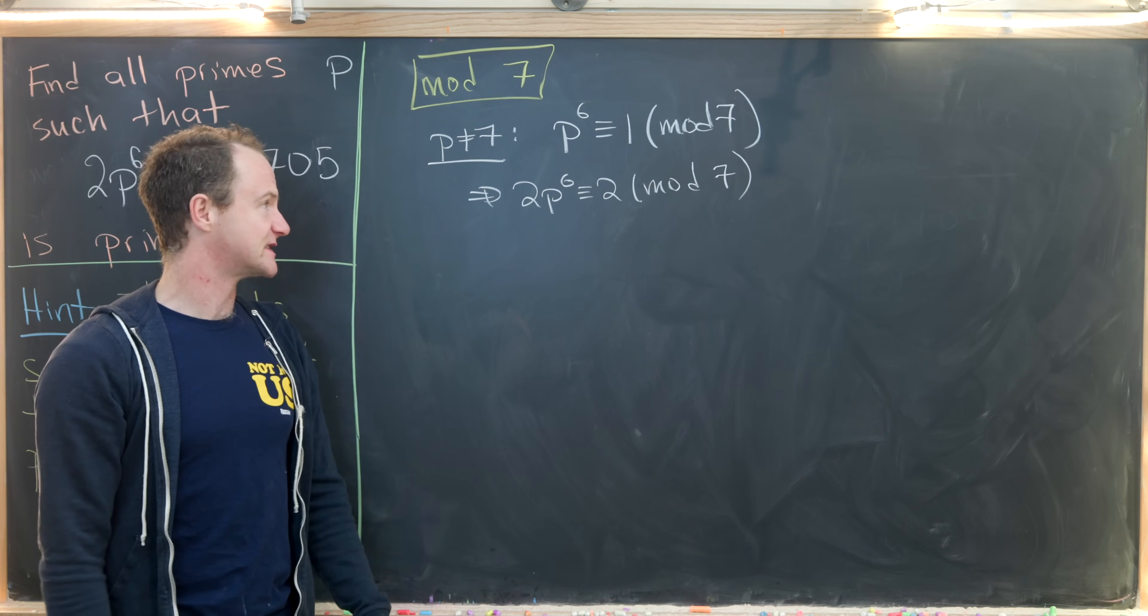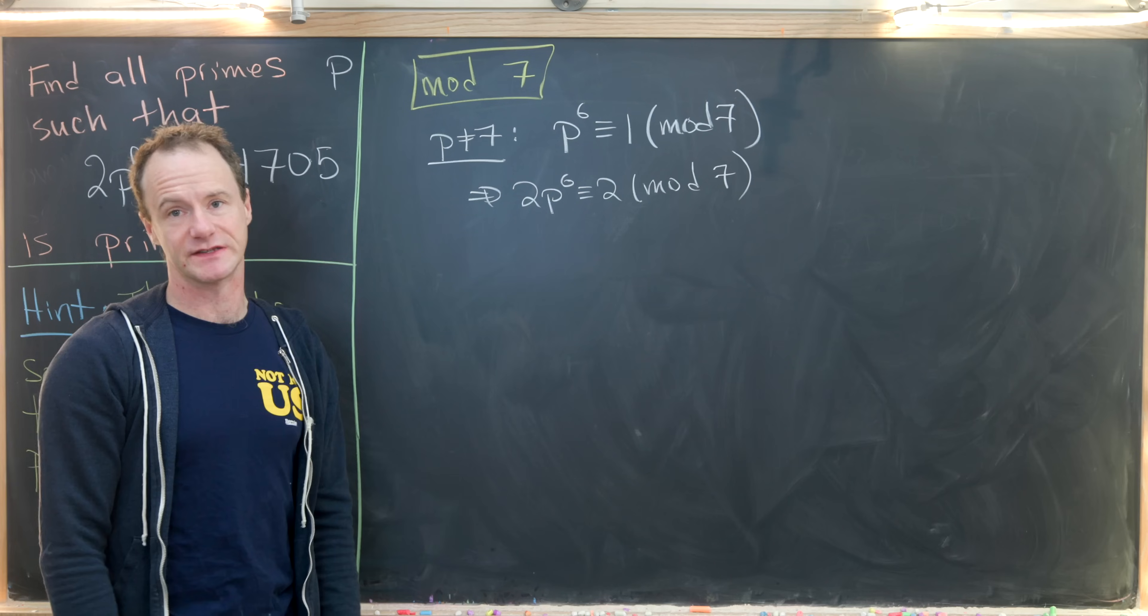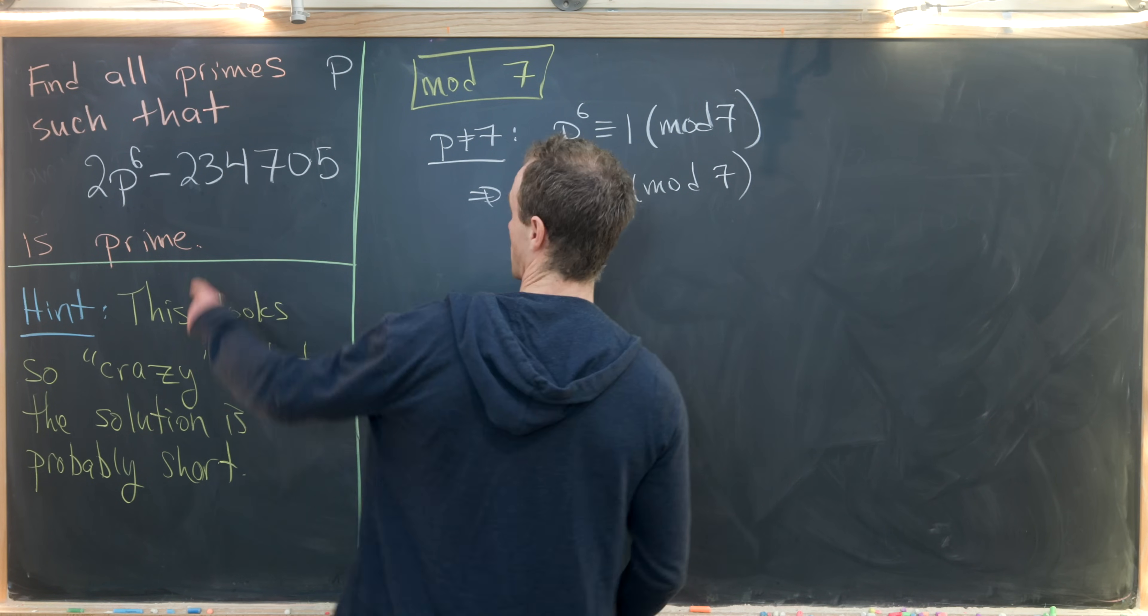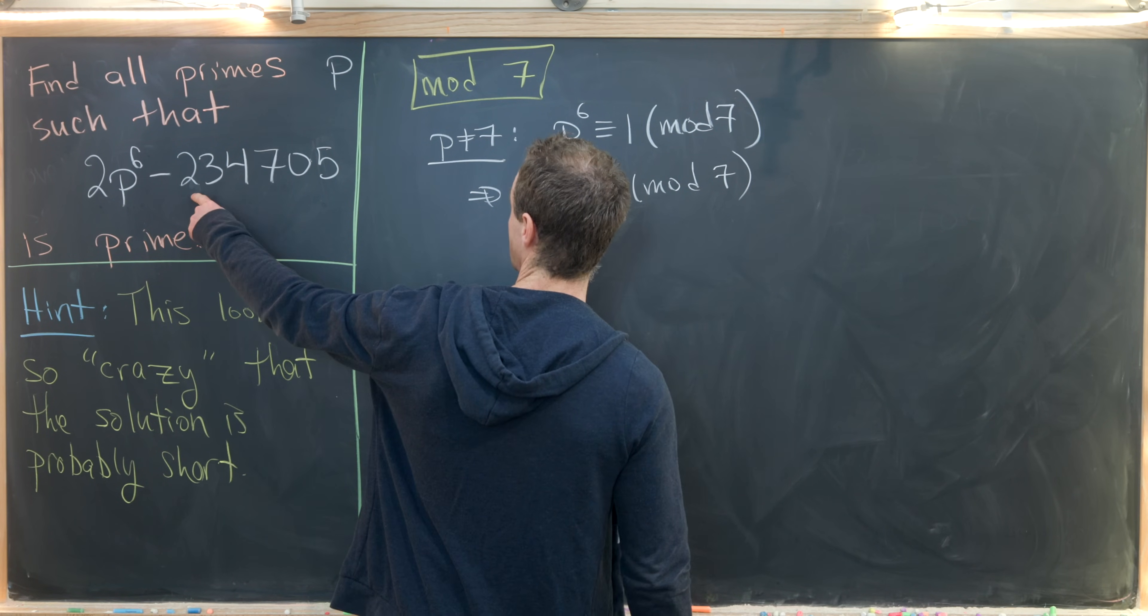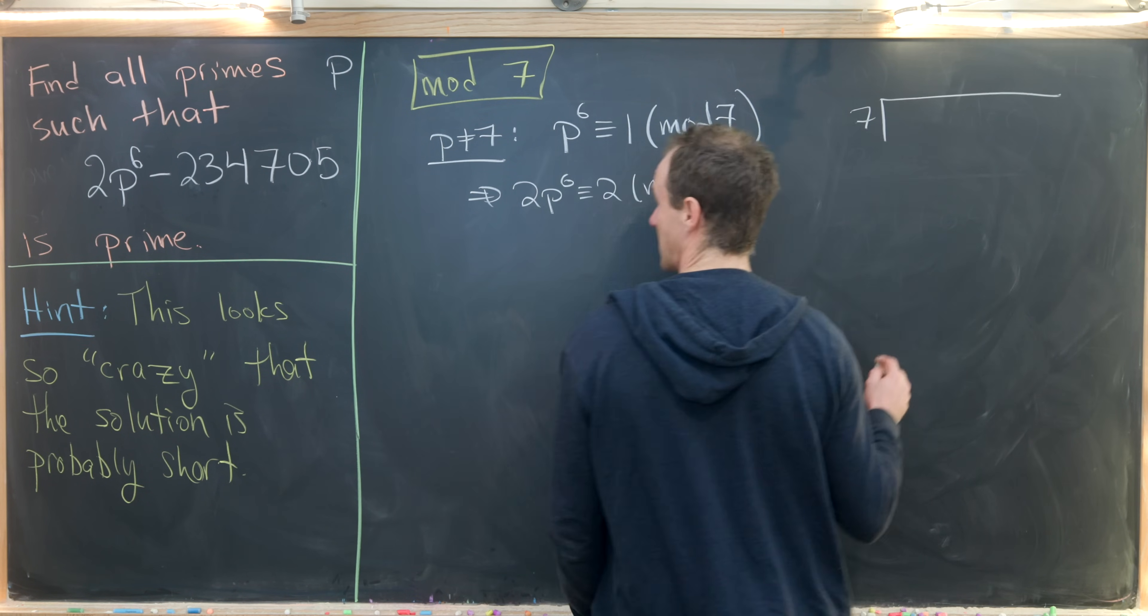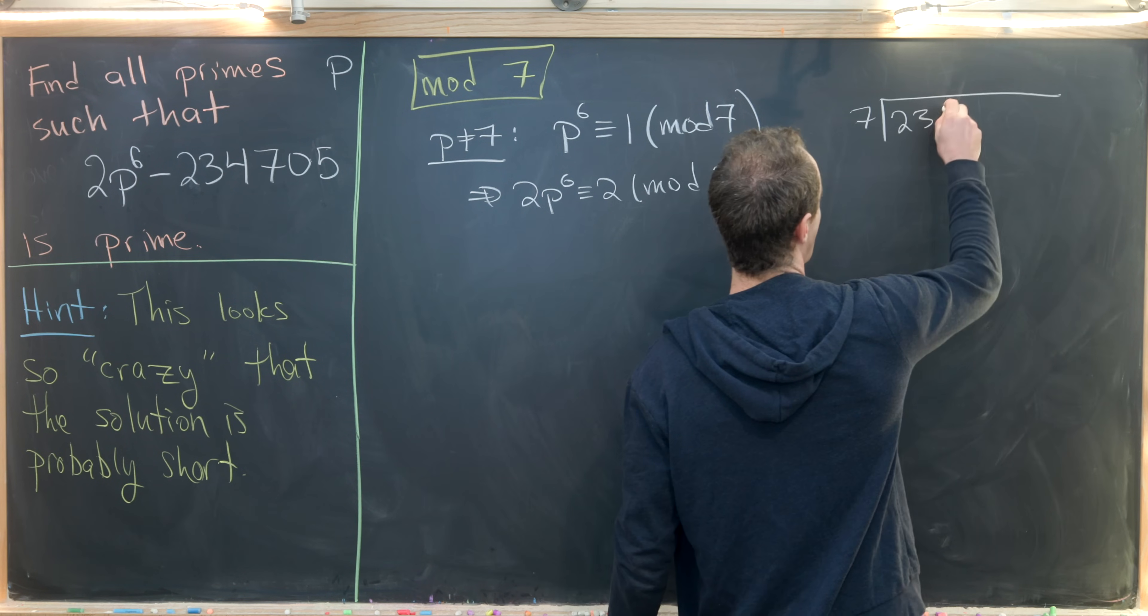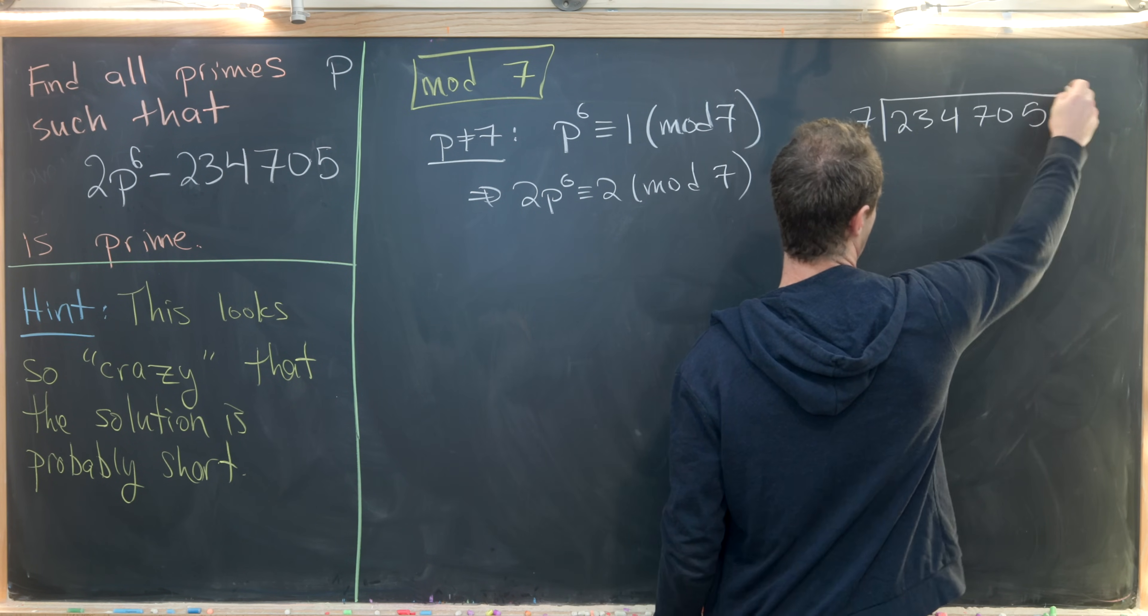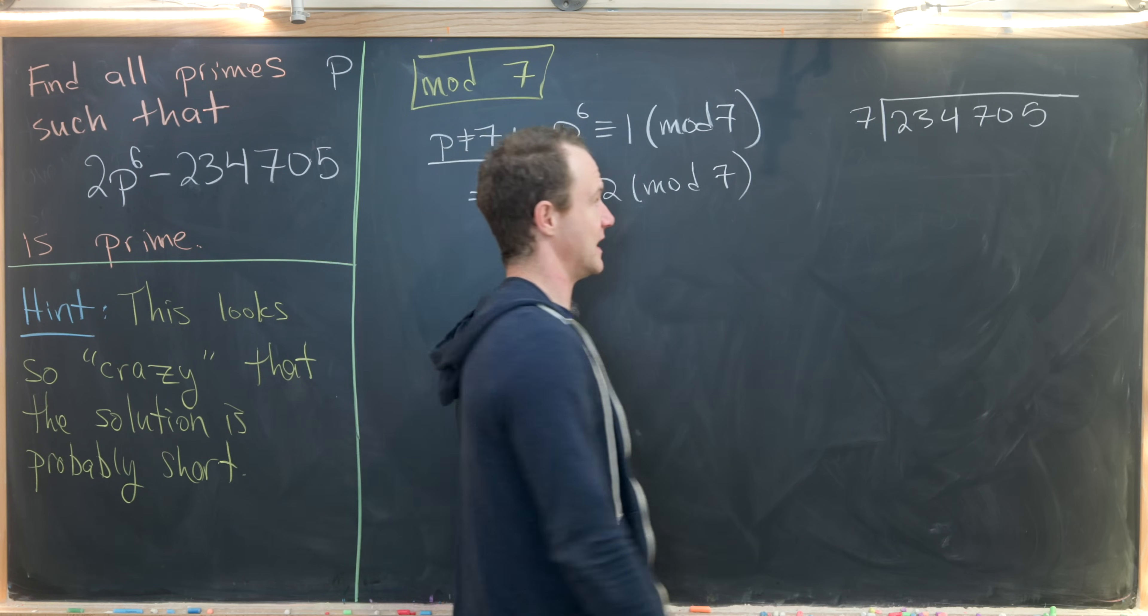Now in the case when p is equal to 7, we'll have to work that out on its own. Next up, we'll look at the rest of this number. So in other words, we want to reduce 234,705 mod 7. And the best way to do that is just to divide with remainder. So 234,705. And let's see what we get dividing that with remainder.